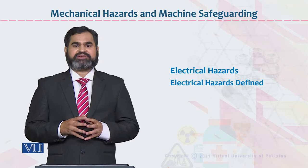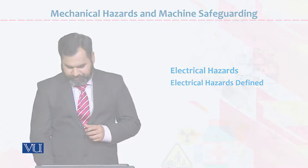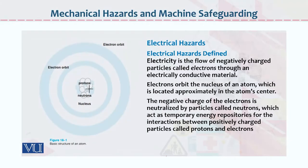Now we will see first the definitions of electricity. Electric hazard is defined as: electricity is the flow of negatively charged particles called electrons through an electrically conductive material.